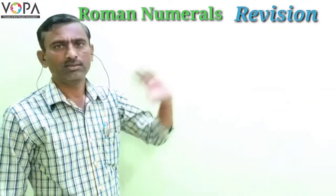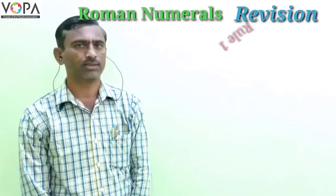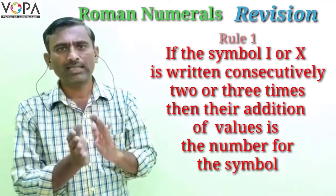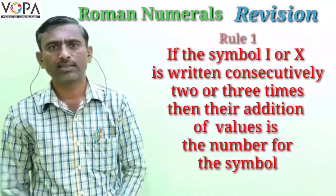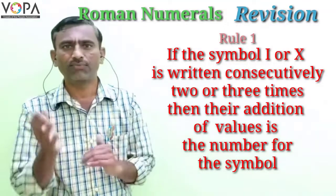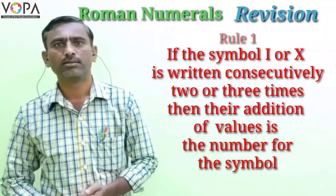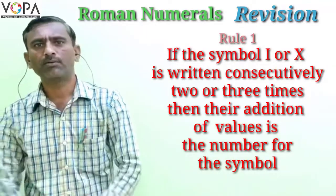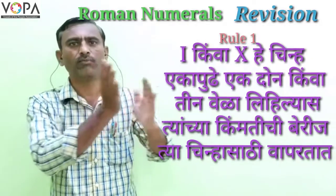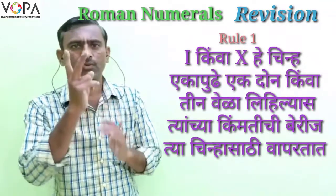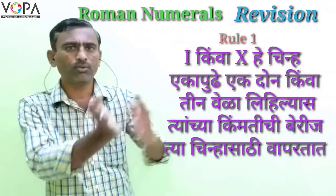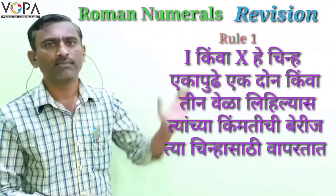In this, firstly we have to see rule first. If the symbol I or symbol X is written consecutively two or three times, then its value is added to get the number for the symbol.